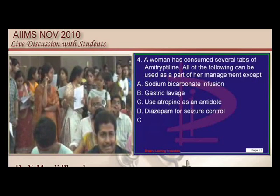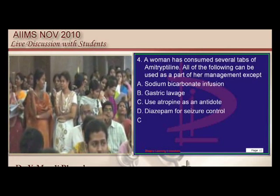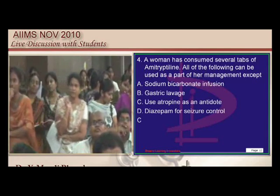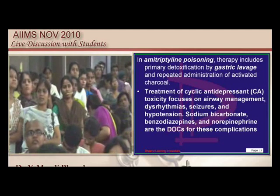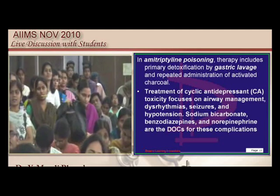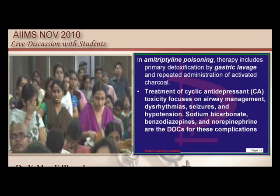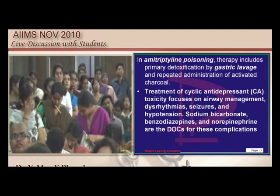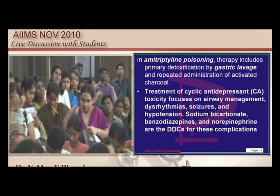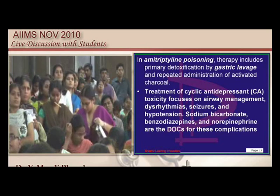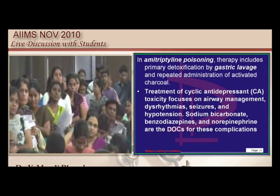Amitriptyline and all the tricyclic antidepressants — what is the common thing? They are all basically anti-cholinergic in their action. That is the reason whenever amitriptyline poisoning occurs, we give sodium bicarbonate, we do gastric lavage, we give diazepam for seizure control, but we do not give atropine because amitriptyline already has anti-cholinergic action. There is no point giving atropine which once more has anti-cholinergic action.